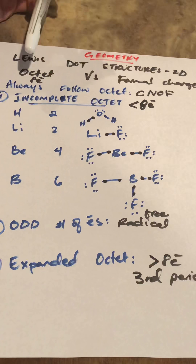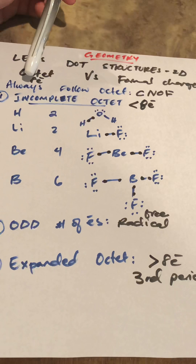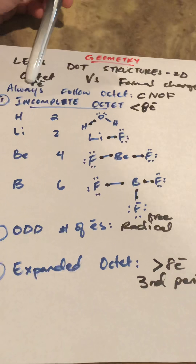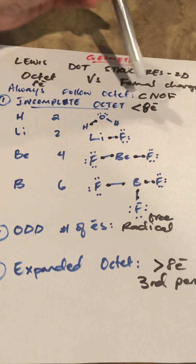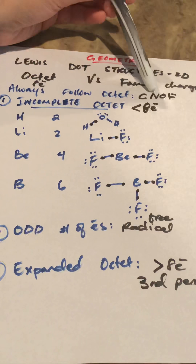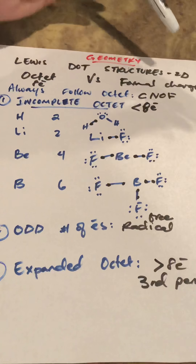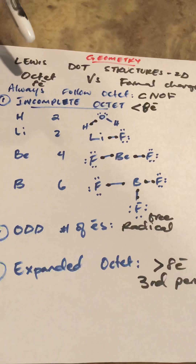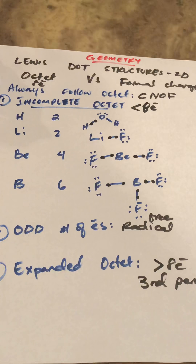There are a couple of elements that will always follow the octet. These are carbon, nitrogen, oxygen, and fluorine. It's very handy to know these four elements. There are also exceptions to the octet rule.